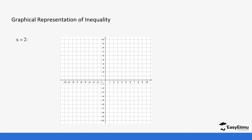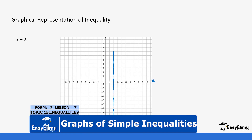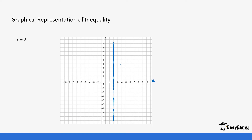For example, if you want to represent x equals 2, that means x is actually 2. You go to the Cartesian plane on the x-axis and find where 2 is. We draw a straight bold line on 2, and the bold line tells us that 2 is actually part of the values of x. We do not have greater than or less than, so our answer is just that line.